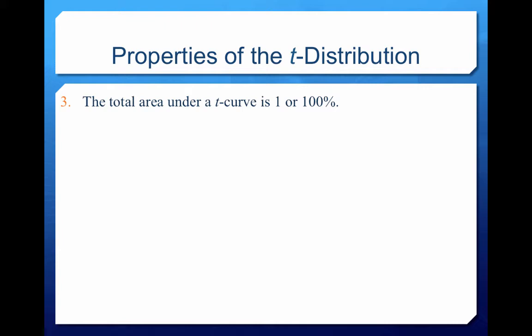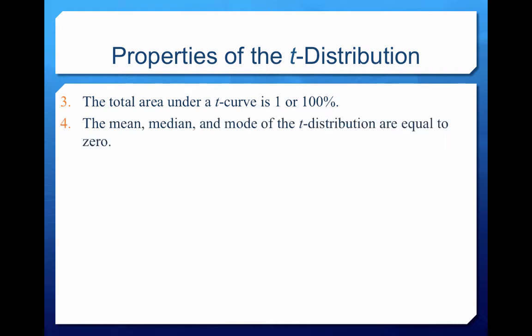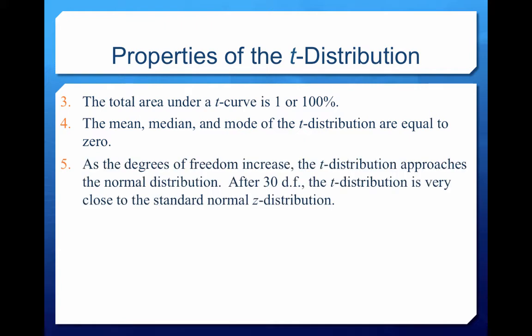Just like with our normal distribution, the total area under a t-curve is 1 or 100%. The mean, median, and mode of the t-distribution are all equal to 0, right in the middle. As the degrees of freedom increase, the t-distribution approaches the normal distribution. After 30 degrees of freedom, the t-distribution is very close to the standard normal z-distribution.